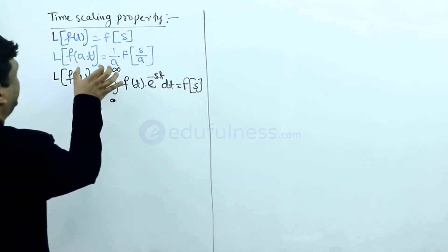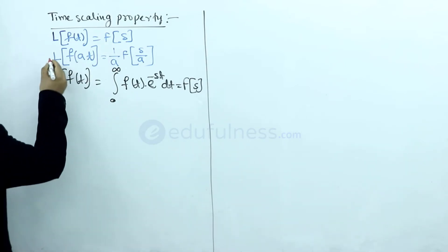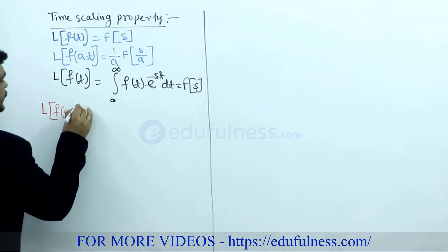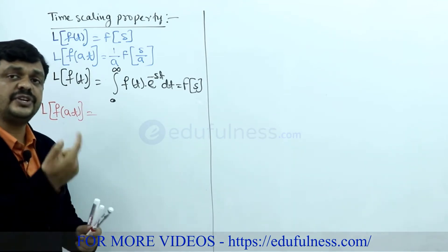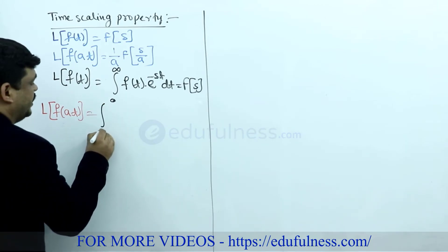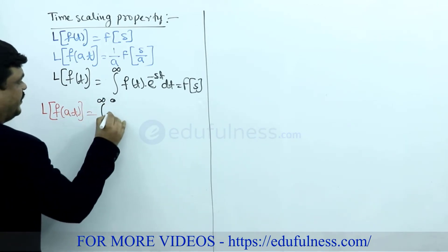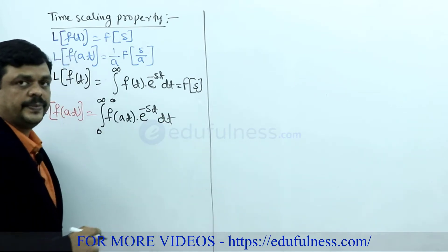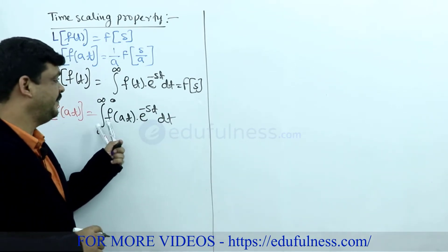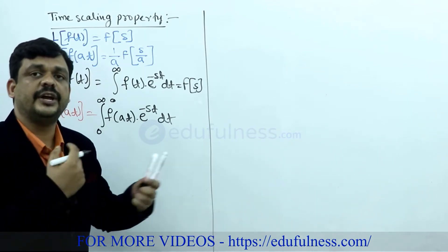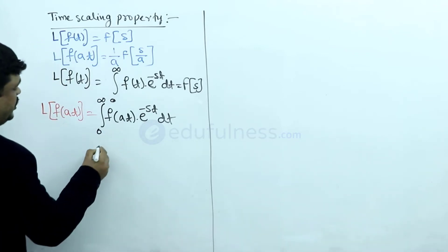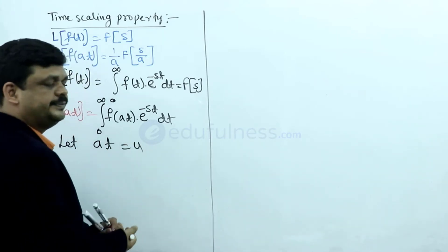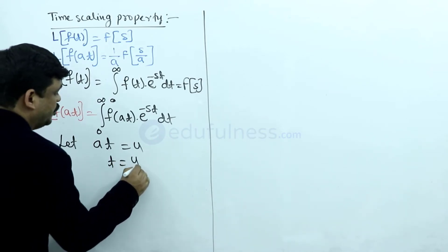Similarly, now we have to find the Laplace transform of f(at). The left-hand side is Laplace transform of f(at). Applying the Laplace transform formula: integration from 0 to infinity of f(at) · e^(−st) dt. The integration is with respect to t, but the function is defined in terms of at. To equate the variables, let at = u. Then t = u/a, and since a is constant, dt = du/a. The limits remain 0 to infinity.